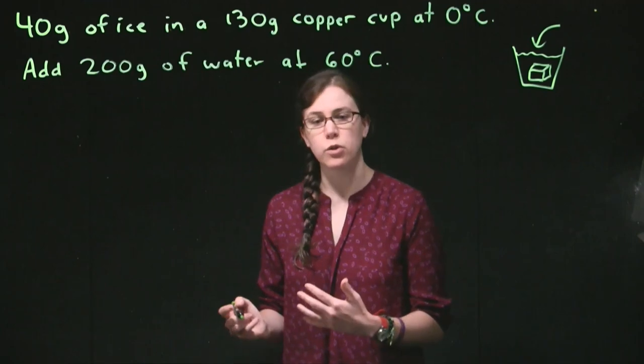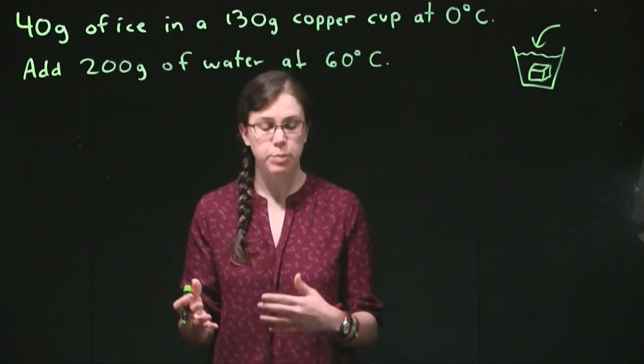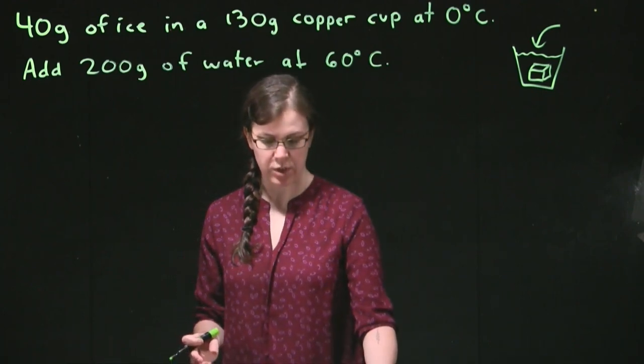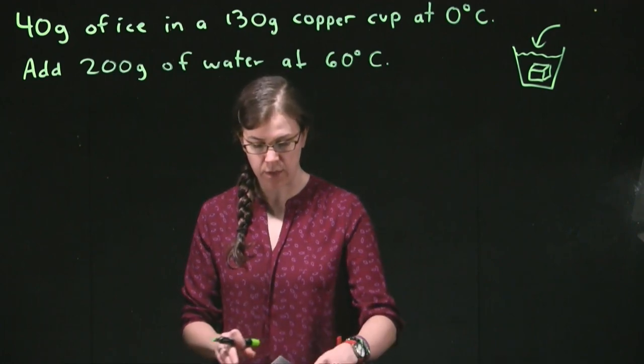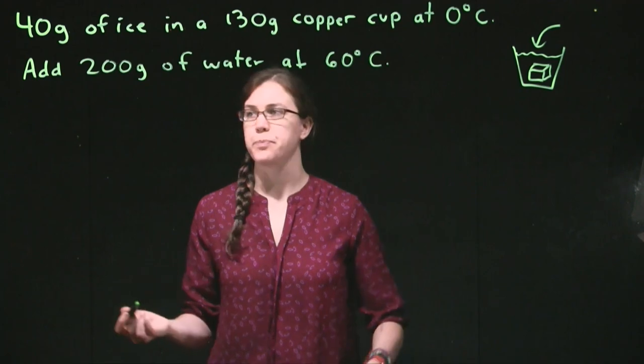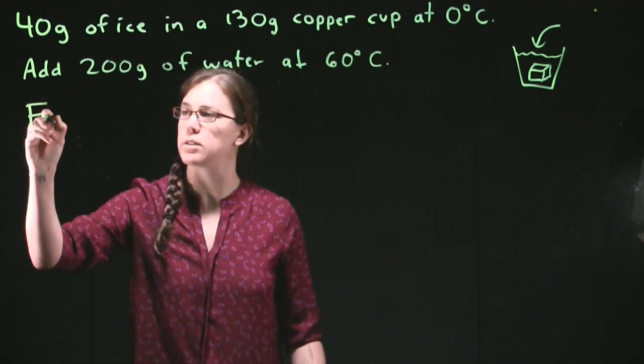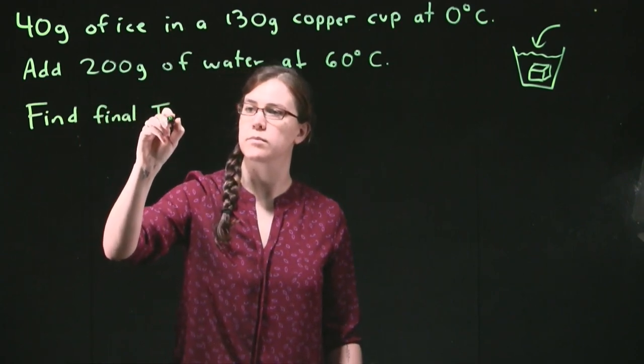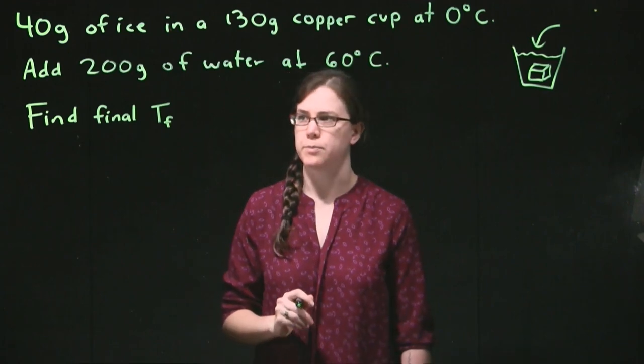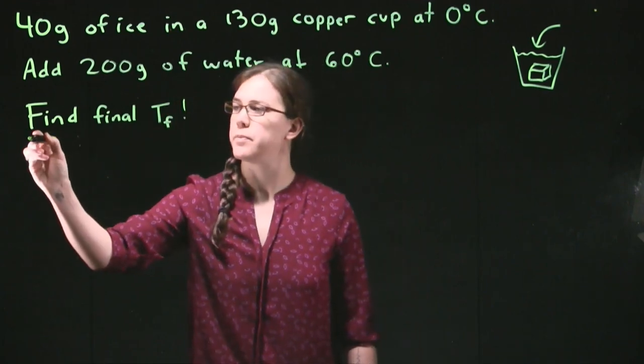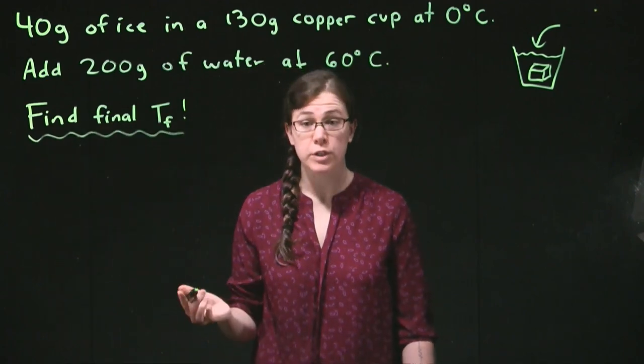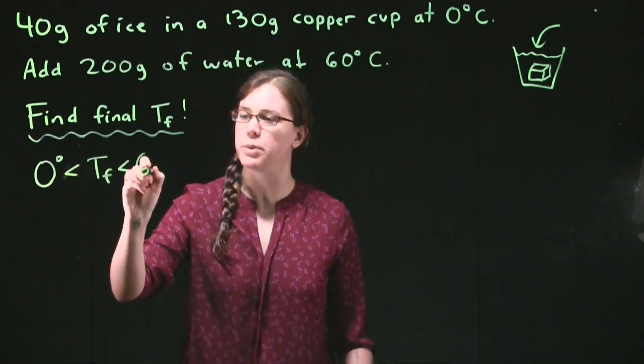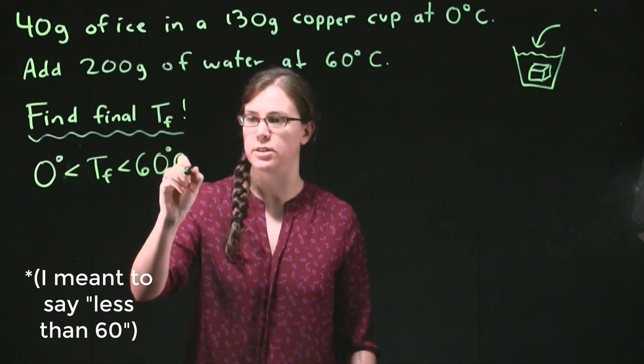We realize that final temperature has to be hotter than zero degrees Celsius, but it has to be colder than 60 degrees Celsius. That'll be a good way for us to check our final answer. We also have to make sure that we understand that we are assuming that there's no heat being lost from the system. If there's no heat lost to the surroundings, then our goal is to find the final temperature of the mixture.